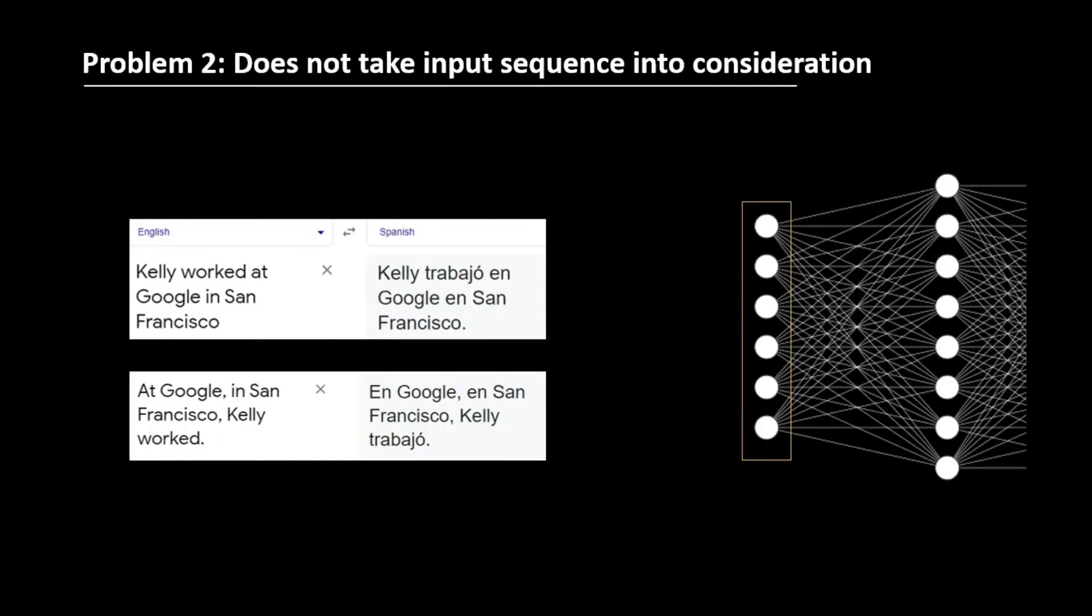Now, here arrangement of the words also matter or the sequence in which the words appear matters. For example, if you see these two sentences, both have same words but they appear in different order and thus the translation for them are different. And for a simple neural network, the order in which we feed the input does not matter.